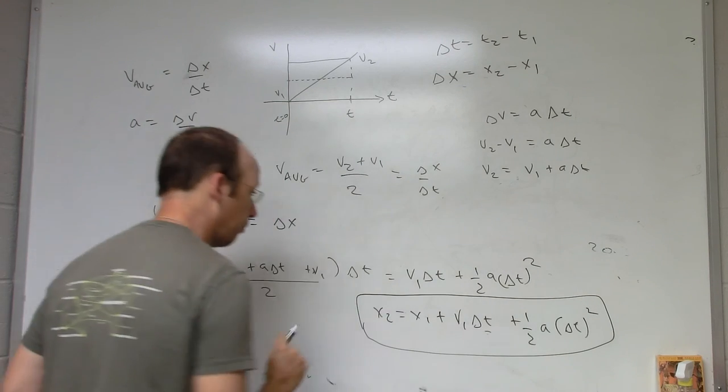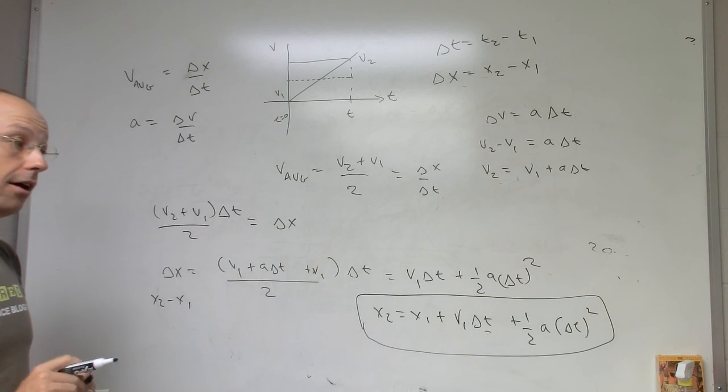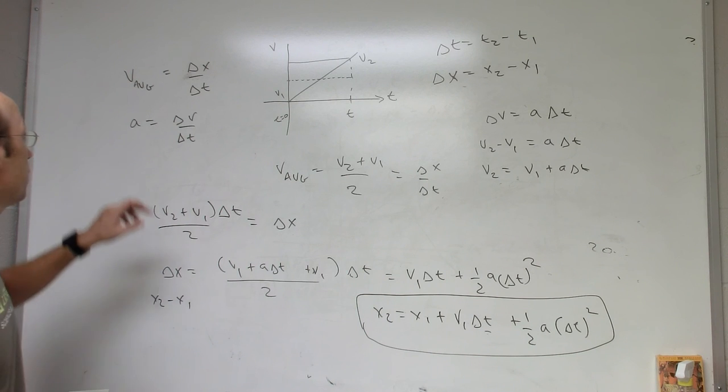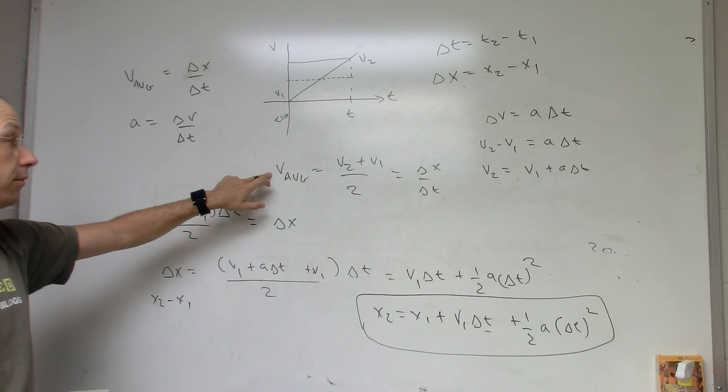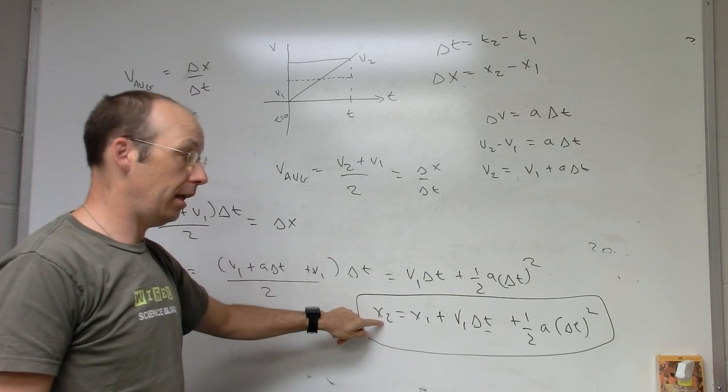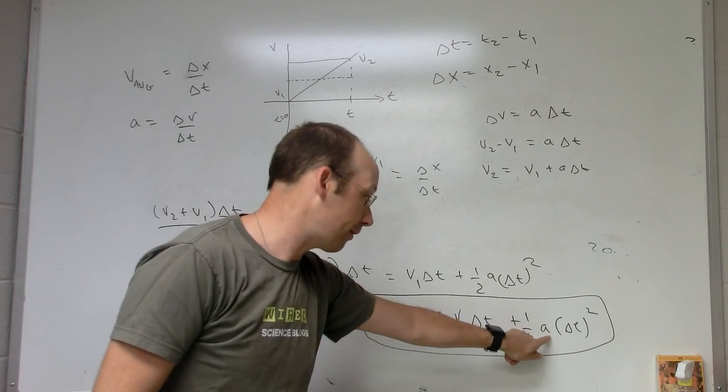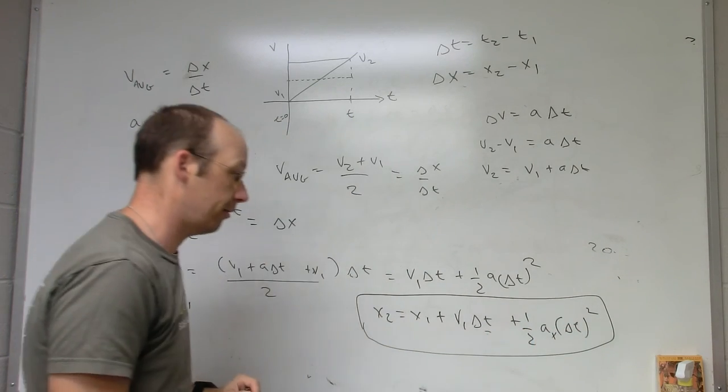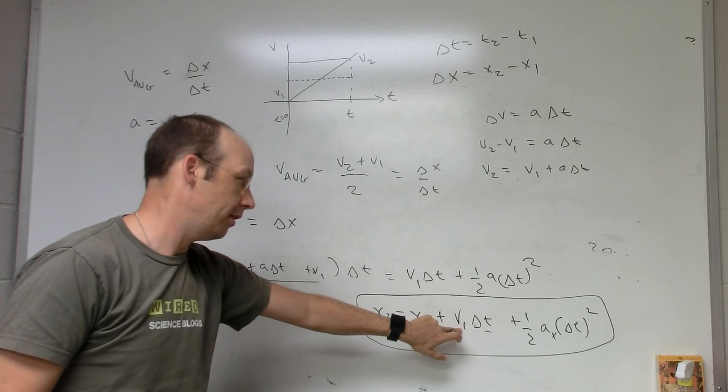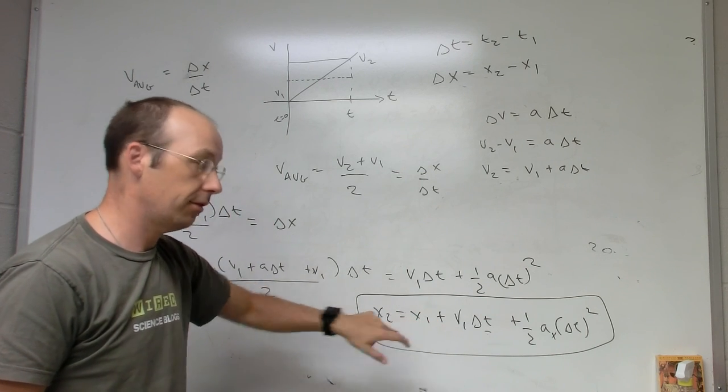And that is your most important kinematic equation. And it doesn't require calculus, and it comes from just these two definitions plus the definition of average velocity this way too. This says x, but it works as long as this is the x acceleration. It's the x acceleration, and this is the x initial velocity, and this is x. These are all x's.